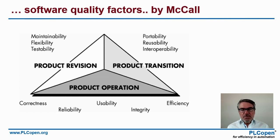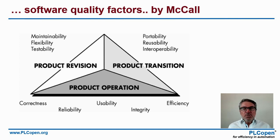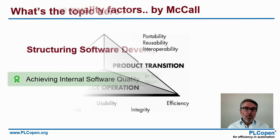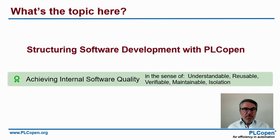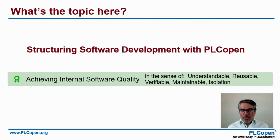For product transition — using it in a different or enhanced version of the product — you see portability, reusability, and interoperability. In this presentation, structuring software development with PLC Open, we try to achieve internal software quality in the sense of understandable, reusable, verifiable, maintainable, and isolated — not spaghetti code.